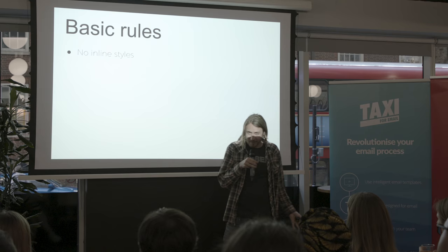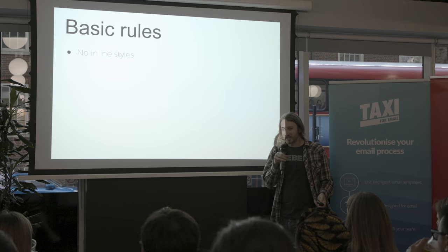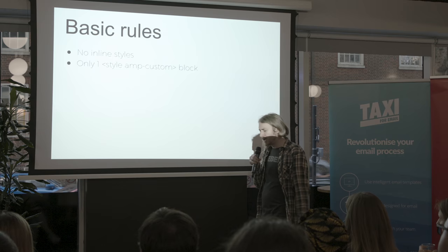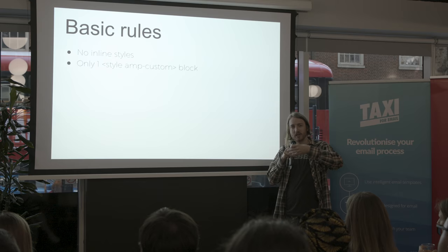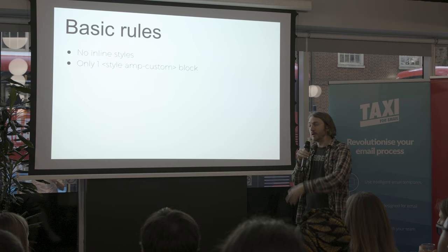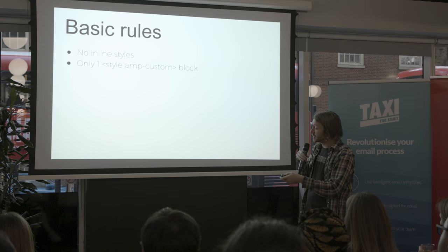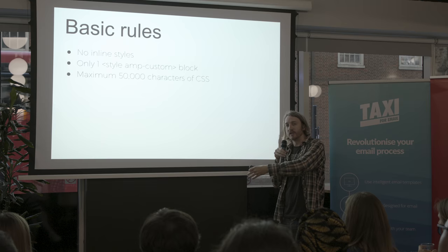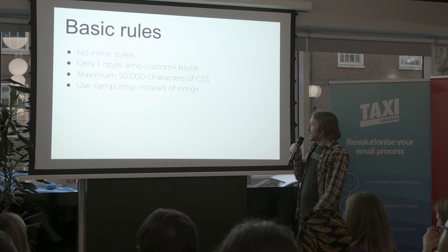A few basic rules. No inline styles — if you're used to building emails with lots of inline styling, you can't do that with AMP. It's something that might be changing, hopefully. Only one AMP custom style block — if you're used to coding for Gmail using multiple style blocks to get around the 16,000 character limit, you can't do that with AMP. But AMP has got 50,000 characters of CSS, so it's plenty. Because you don't have inline styles, you do have more going on in the CSS, but I've not hit that limit yet just playing around.